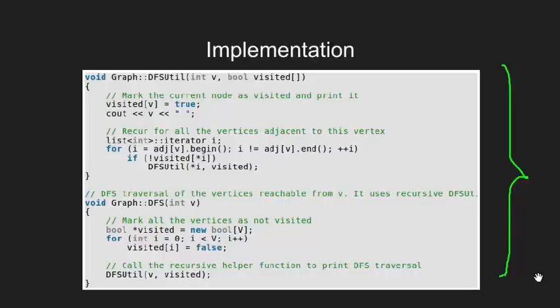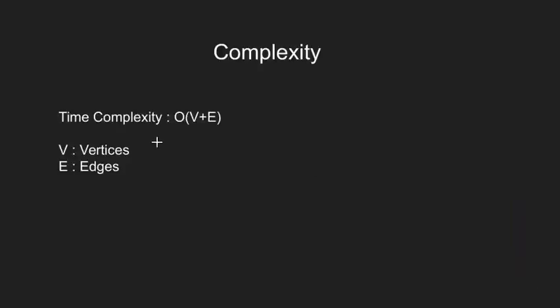Let's quickly look at the complexity of the code. Depth first search visits every vertex in the graph and checks every edge for each node. Therefore, time complexity for depth first search is O of V plus E. Here V are the vertices or nodes and E are the edges.